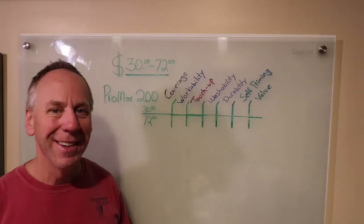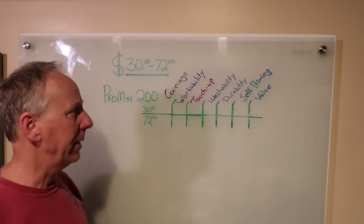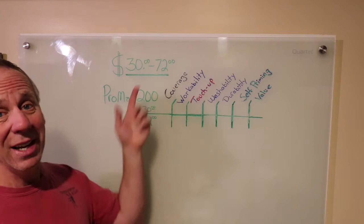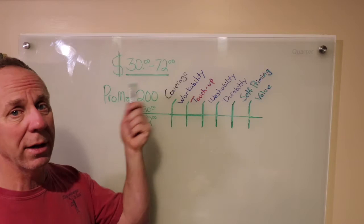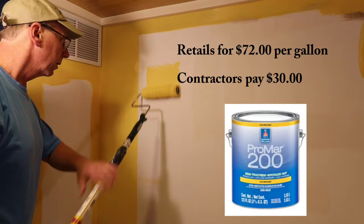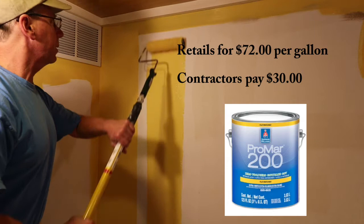Let's come over here to the glass board where I can break down the Promar 200 Eggshell Paint. This really needs to be broken down in two ways: as a contractor price because contractors are getting this for $30, and yet the retail price of this is $72. There is no other paint that Sherwin-Williams has such a huge disparity. This is over 100% difference in cost of what contractors pay and what the retail price is. I want to break down the value of this paint as a $30 paint and as a $72 paint.